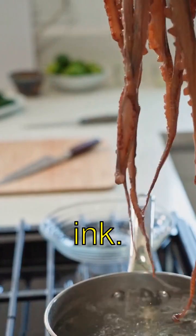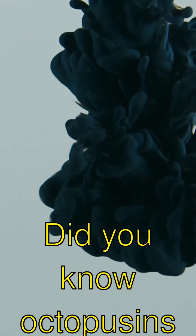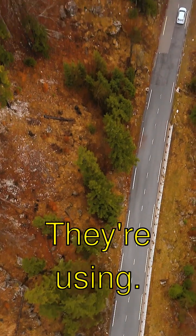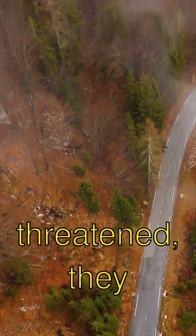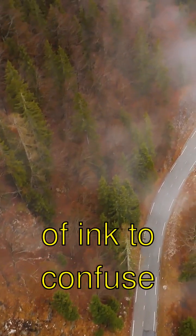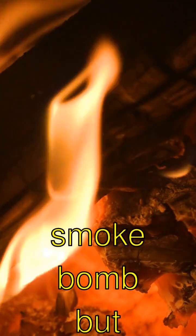The Awesome Power of Octopus Ink. Guess what? Did you know octopuses have a secret superpower? They use ink. When they're feeling threatened, they squirt out a cloud of ink to confuse their enemies. It's like a ninja smoke bomb but underwater.